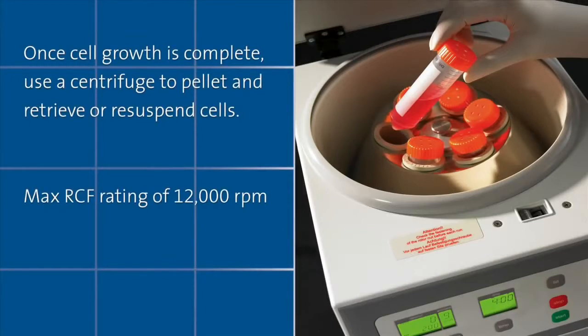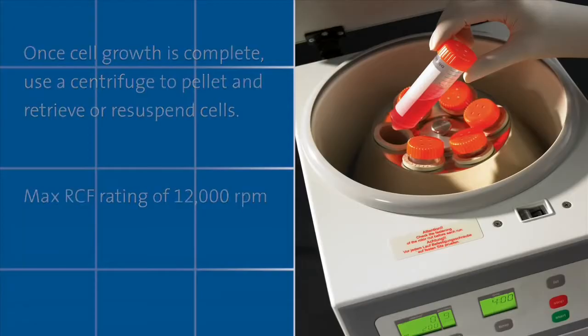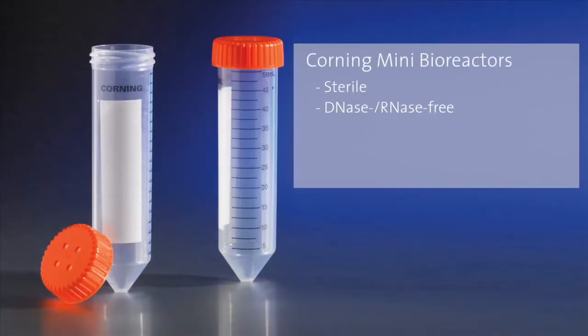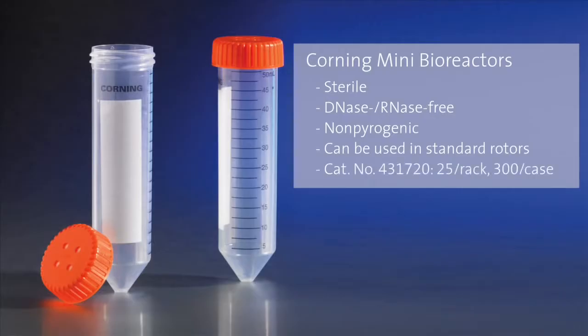Once cell growth is optimized and complete, take the tube and place it directly into the centrifuge to pellet and retrieve or resuspend cells. The mini bioreactor is sterile, DNase and RNase free, and non-pyrogenic.